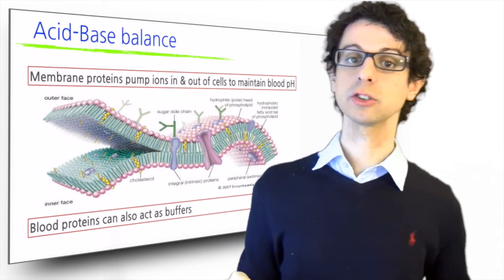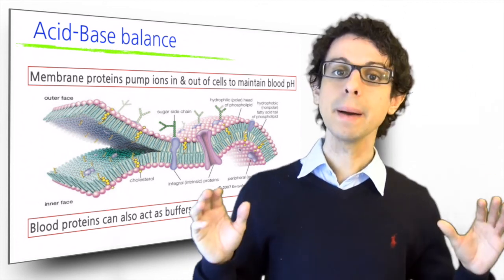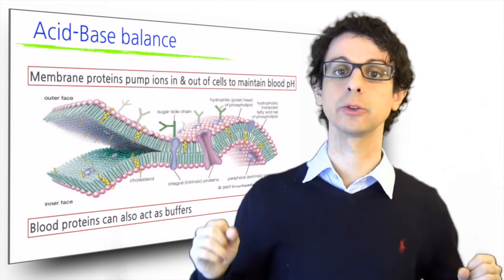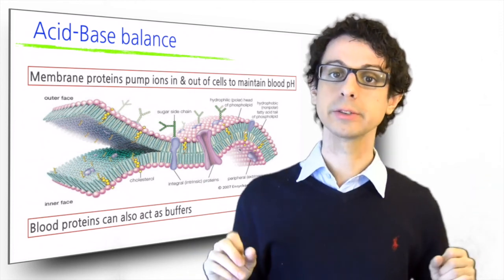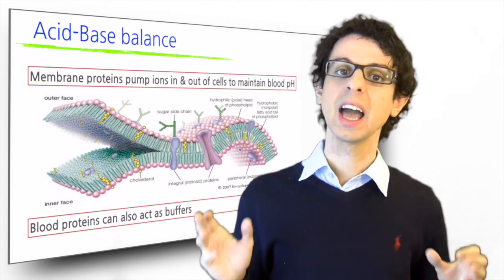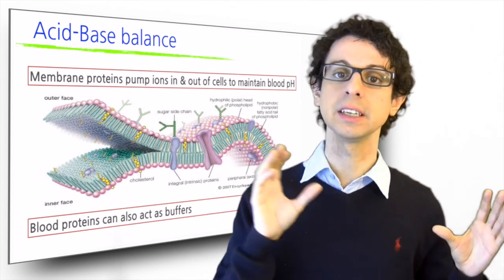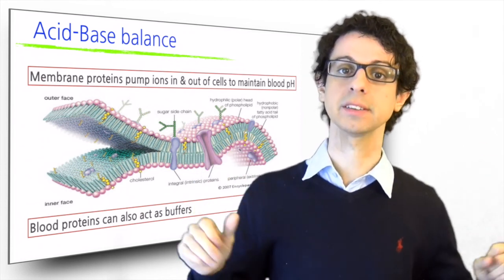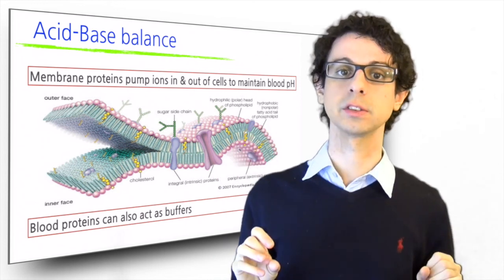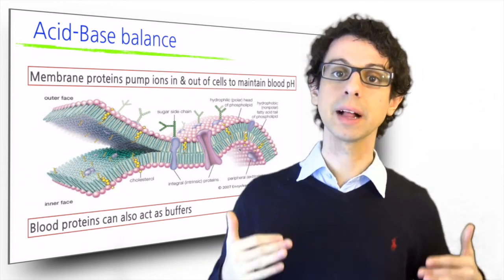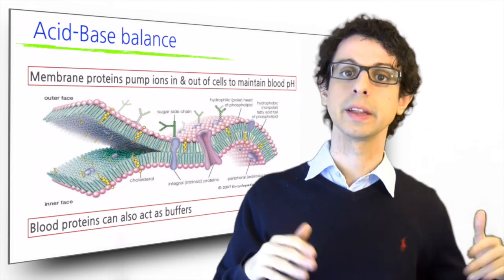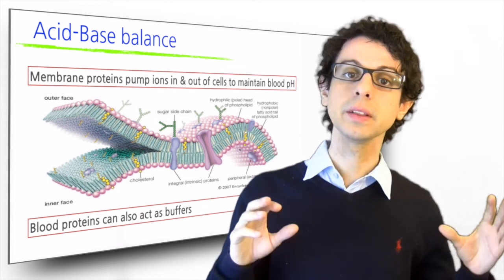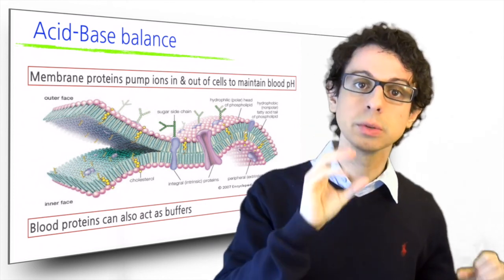Another important function of proteins is acid-base balance. Membrane proteins can act as channels that regulate what goes in and out of our cells. One of these regulated substances is hydrogen. And by deciding how much stays in and out, we are able to strictly maintain the pH of our blood and our cells in the narrow range that's required to sustain life. Also, in our bloodstream, there are proteins that can act as buffers. They block some hydrogen if there's too much or release it if there's not enough. And by doing this, they can further fine-tune the pH of our blood.